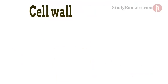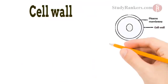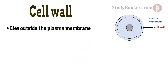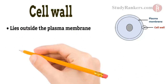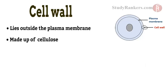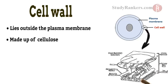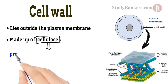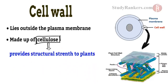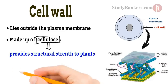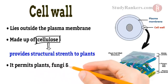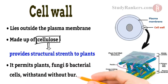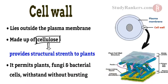Cell wall. The cell wall is another rigid outer covering that lies outside the plasma membrane and is made up of cellulose. Cellulose is a complex substance which provides structural strength to plants. It permits the cells of plants, fungi, and bacteria to withstand very dilute media without bursting.